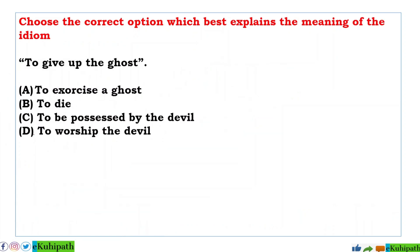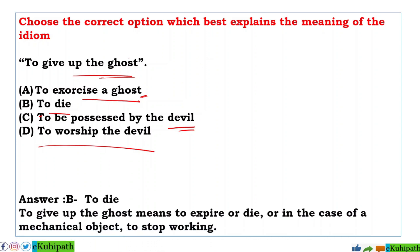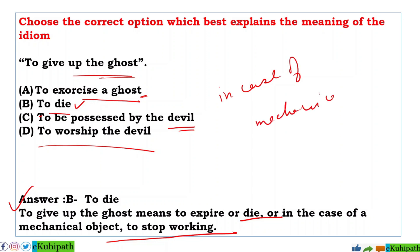Next idiom: 'to give up the ghost'. Options: A: to exercise, B: to die, C: to be possessed by a devil, D: to worship the devil. The correct answer is B — to die. To give up the ghost means to expire or die. In the case of a mechanical object, it means to stop working.